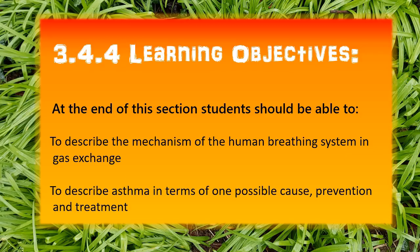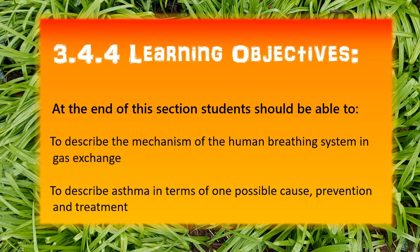Let's start by looking at the learning objectives for this lesson. At the end of this reading you should be able to: one, describe the mechanism of the human breathing system and gas exchange; two, describe asthma in terms of one possible cause, prevention, and treatment. Gas exchange means swapping gases — getting rid of carbon dioxide out of our blood and swapping it for oxygen. Mechanism is how something works.